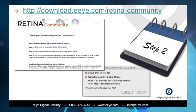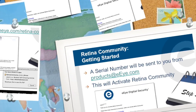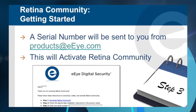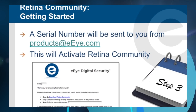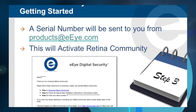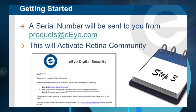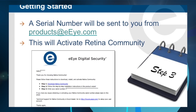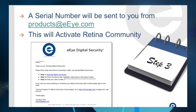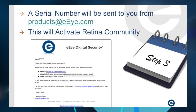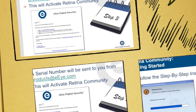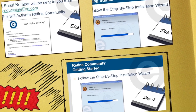Next, open your email and look for your activation code. In your inbox, you should have an email from products@ei.com. If it does not arrive within a few moments, please check your junk email and spam filters to see if it was incorrectly identified.